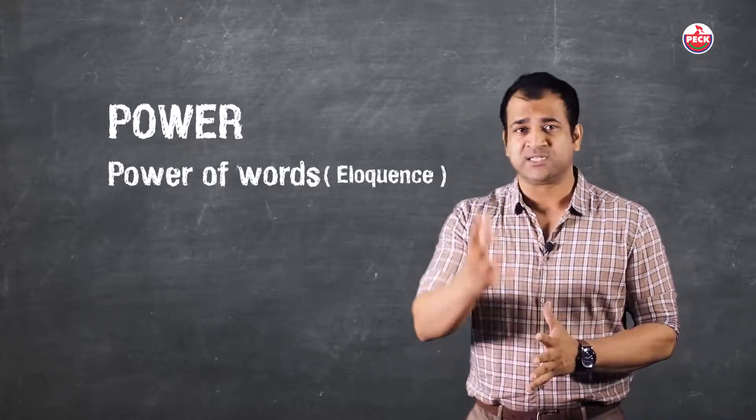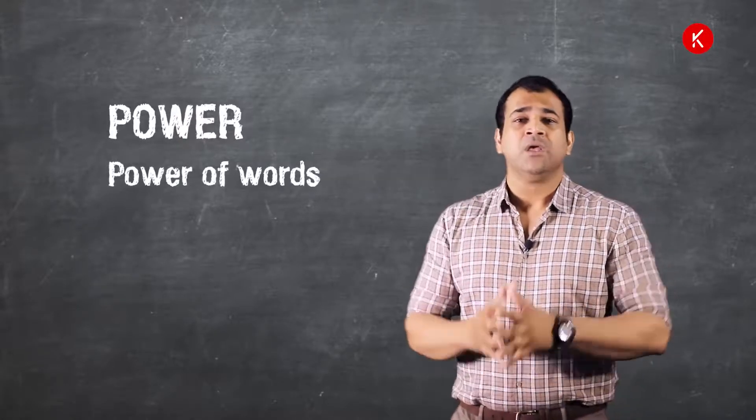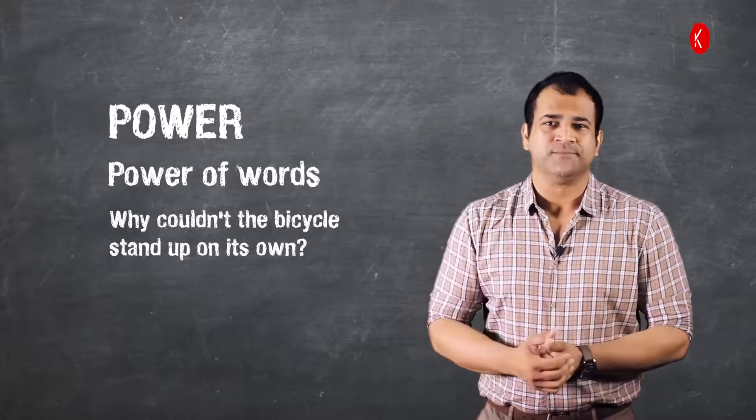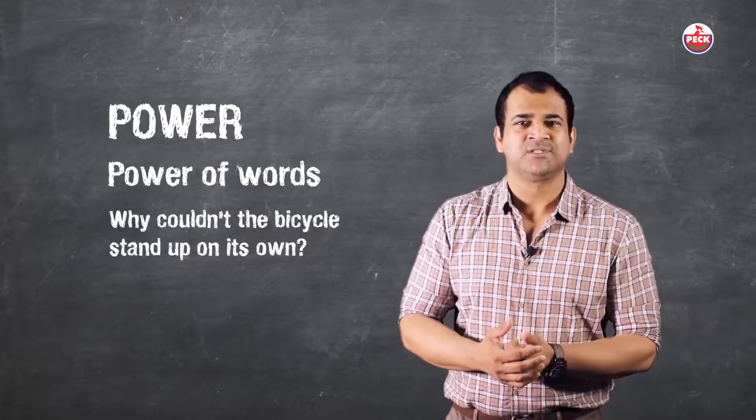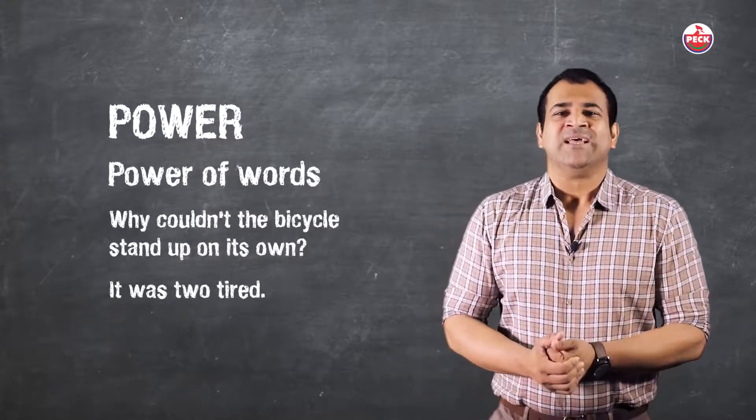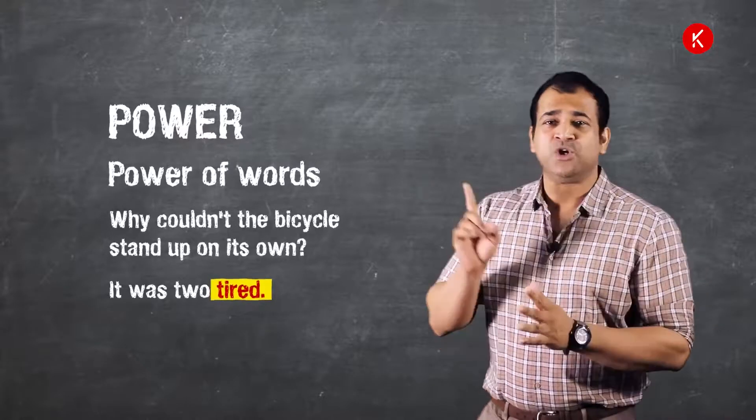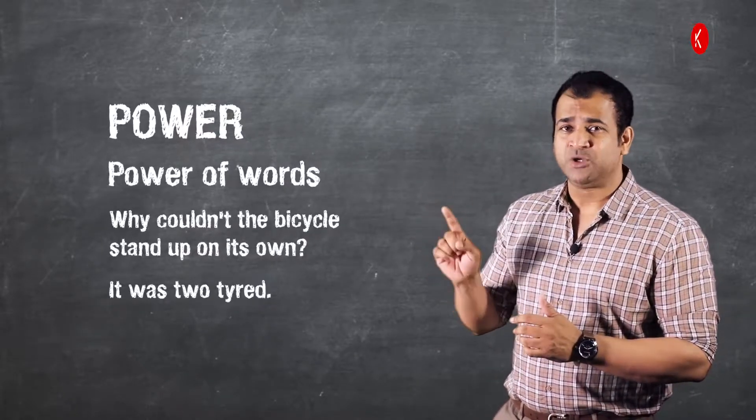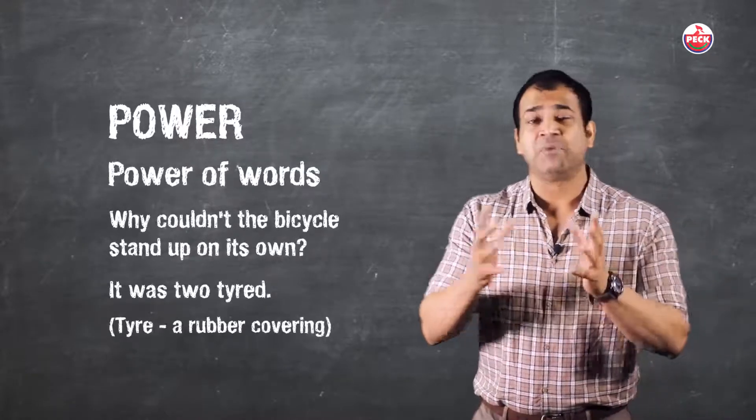Power of words. Why couldn't the bicycle stand up on its own? Guess. Because it was too tired. Note the highlighted word 'too' and 'tired', but actually it has to be T-Y-R-E-D, tire, a rubber covering.